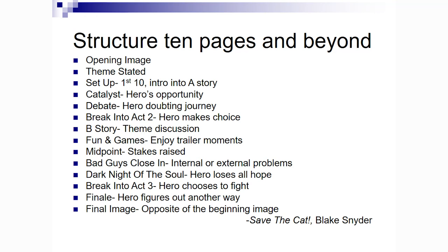This is a fairly complex structure, and this is what I use for my outlines — it's from Save the Cat. Blake Snyder goes into really detailed analysis of movies and talks about: opening image, theme stated, setup, catalyst, debate, break into act two, B story, fun and games, midpoint, bad guys close in, dark night of the soul, break into act three, finale, and final image — which is the opposite of the beginning image. That's what I use to structure my screenplays. Save the Cat — I highly recommend it.